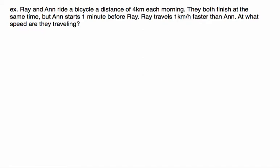In this example, Ray and Ann are riding bicycles a distance of 4km each morning and they finish at the exact same time, but Ann starts 1 minute before Ray. And Ray goes a little faster than Ann, 1km an hour faster. Obviously he has to go faster if he starts later and they cover the same distance and finish at the same time. The question is, at what speed are they travelling?